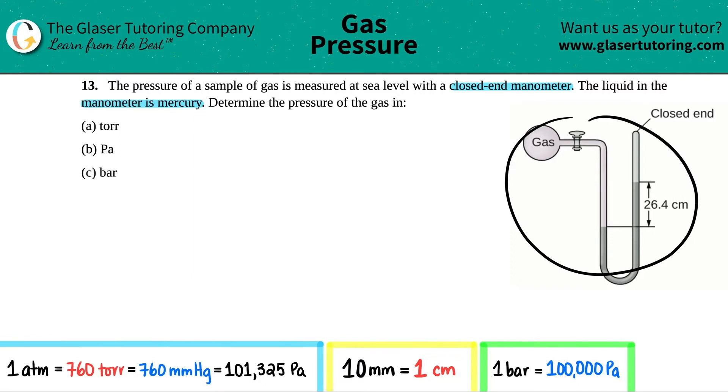We have a closed-end manometer. Closed-end means that this part is not open to the atmosphere, so there's no addition of atmospheric pressure coming into the gas. In order to find the pressure of the gas, it's just the height differences on both ends of this manometer. On the left side the gas goes up to this end, and on the right side the gas goes up to this end.